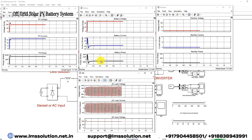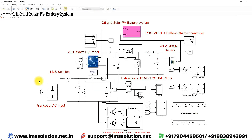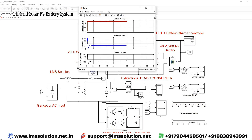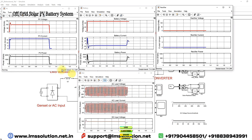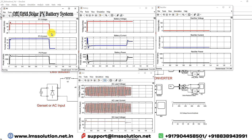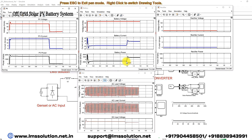Now I am going to make the PV irradiation equal to zero. After that change, we can see that the PV power comes to zero because irradiation goes to zero. The generated power will be zero. Now the battery current changes from negative to positive, meaning it goes from charging mode to discharging mode.